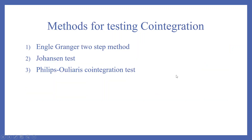Methods for testing co-integration include: the Engle-Granger two-step method, the Johansen test, and the Phillips-Ouliaris co-integration test.